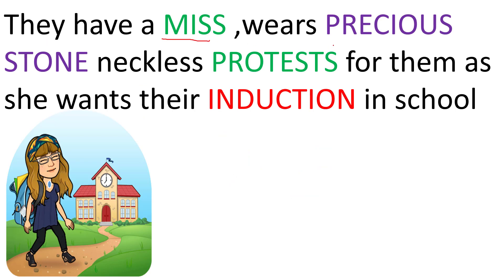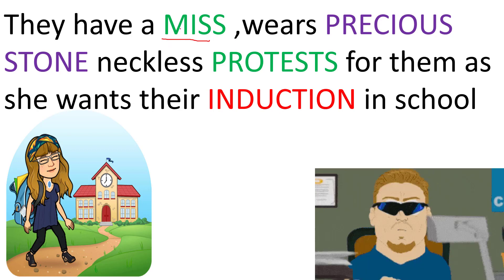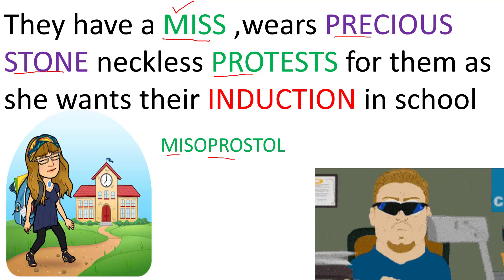Now Oxy and Diana have a miss. She wears a precious stone necklace and protests for them — she wants their induction in school. Miss protests; she is against the principal. From 'miss' we get two drugs that start with MI. The name of the first drug is misoprostol — 'miss protests' means pro, giving misoprostol. The second drug is decoded from 'precious stone' — the word 'stone' — giving mifepristone.